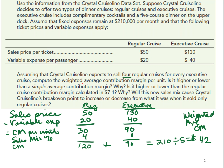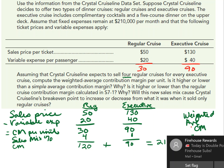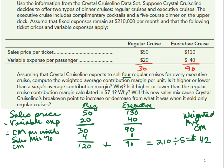The question asks if the weighted average contribution margin is higher or lower than the simple average. It's going to be higher than the regular cruise contribution margin, because the regular was $30 per unit and the executive was $90 per unit. Compared to the $30 contribution margin from the previous single-product problems, the new weighted average of $42 represents an increase of $12 — a pretty nice bump.